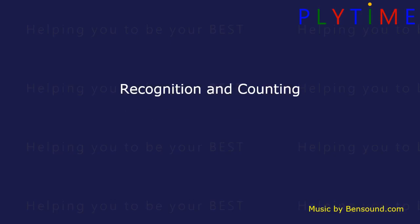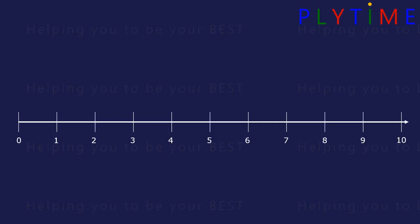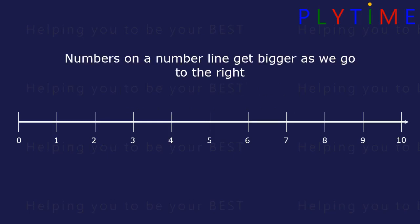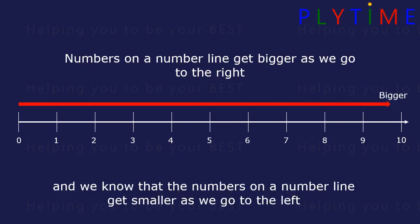Recognition and counting using a number line to 100. Numbers on a number line get bigger as we go to the right, from 0 to 10 they get bigger. Numbers on a number line get smaller as we go to the left, towards 0 is smaller.